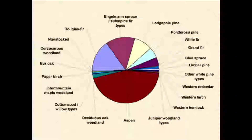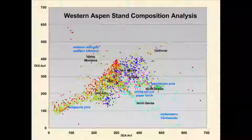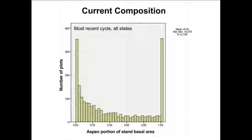Here's a pie chart showing that breakdown. The dominant Aspen type is on the bottom, and really five other major forest types account for most of the places where Aspen occurs. It's just kind of a co-player with a lot of these other minor types within the interior west. Looking at current composition using just the most recent inventory cycle for all states — eliminating older data so it's not double-represented — we see an interesting pattern.